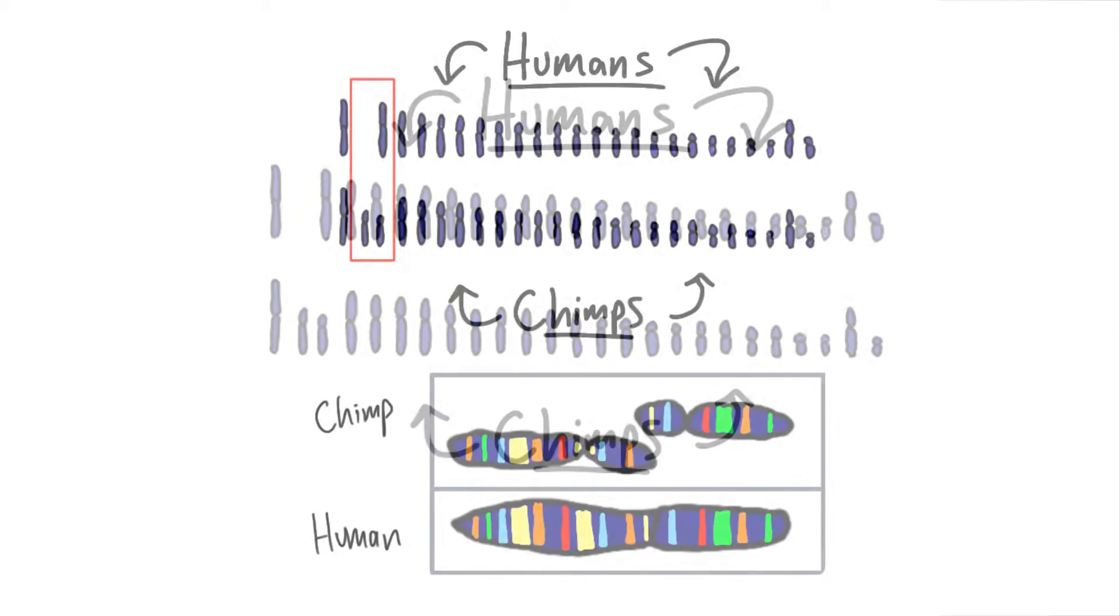That's right. They have two smaller chromosomes, whereas we have one larger chromosome. Now, if we look at the sequence information, comparing our big chromosome 2 to their two smaller chromosomes that we don't have, we see exactly how their sequences line up, perfectly beside each other, matching.